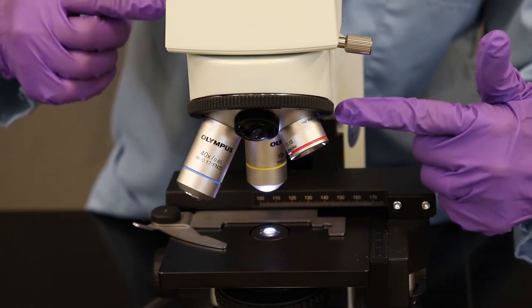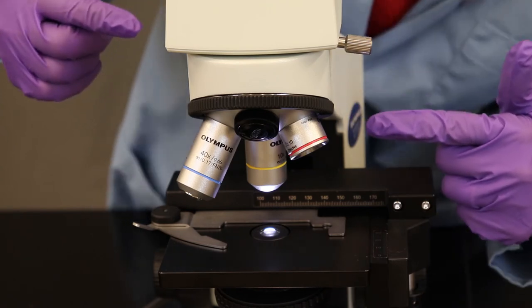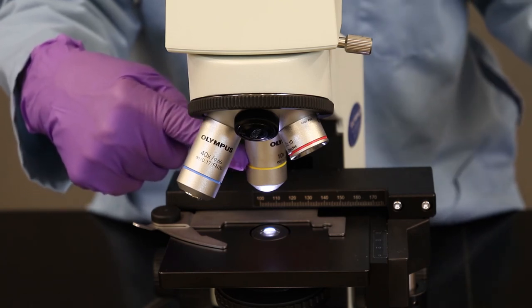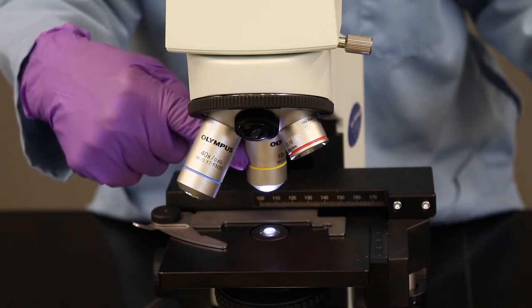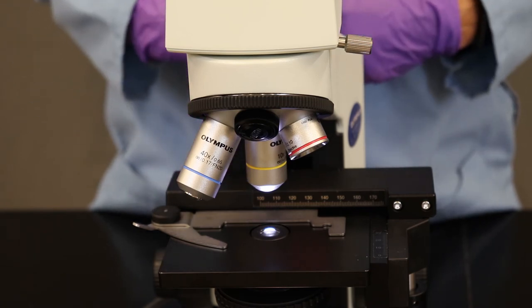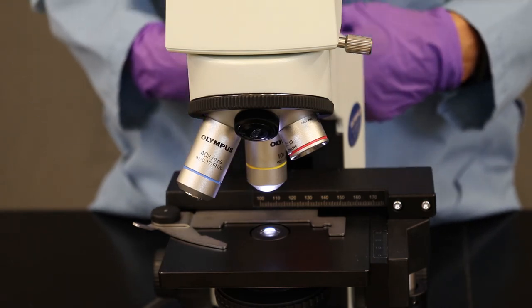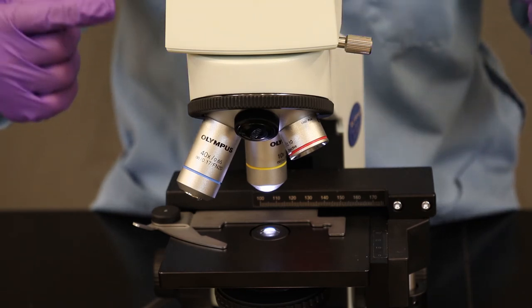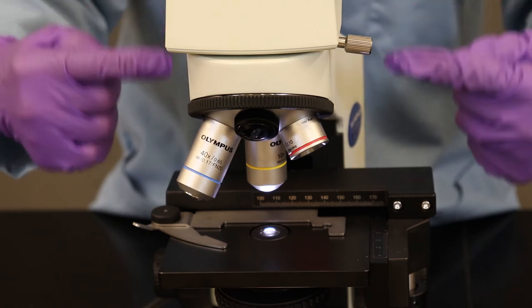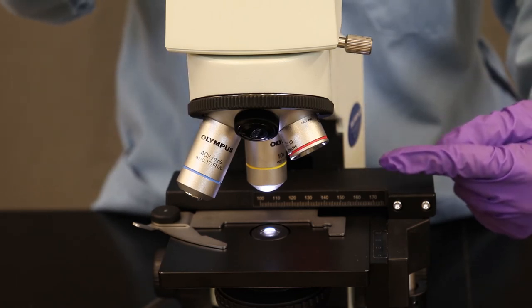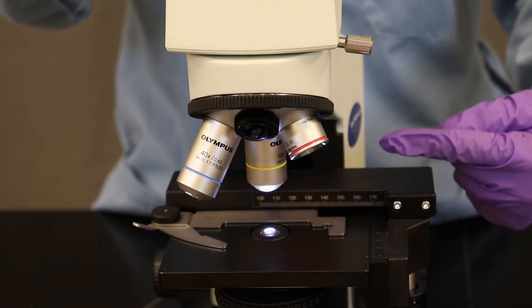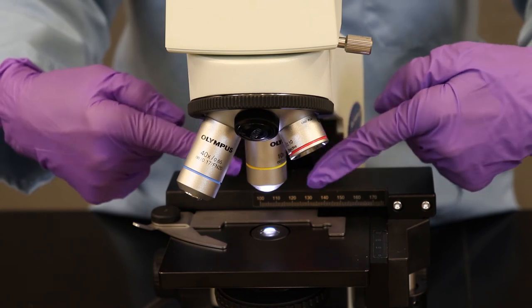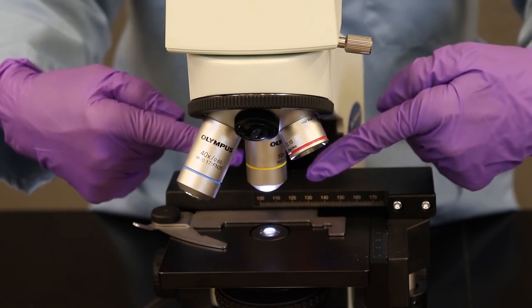But in addition to this little 4x objective, we also have, in yellow here, a 10x objective. The 10x objective adds an additional 10 times the magnification. And it's a multiplying relationship. So the 10x of the objective combined with the 10x of the eyepieces gives us a total magnification of 100x when this particular objective is pointing down towards the stage where the slide is.